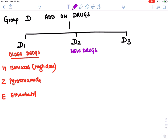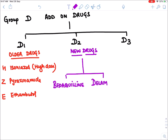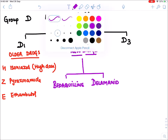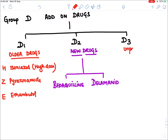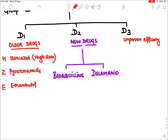D2 drugs are known as new drugs and are very important. Among D2 we have two drugs: bedaquiline and delamanid. These are given in resistant cases of TB only, and these drugs have unproven efficacy — meaning we don't know for certain whether they are effective, but we are out of options.